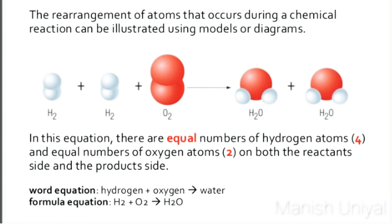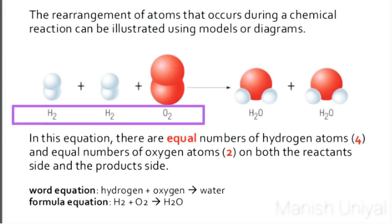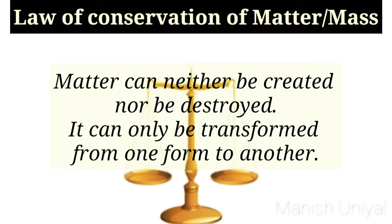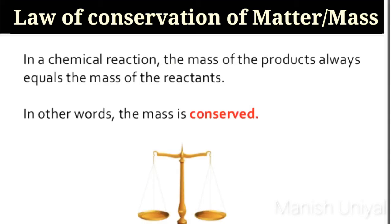In such an arrangement, the number of atoms in the reactant side will be equal to the number of atoms in the product side. Law of conservation of mass: matter can neither be created nor destroyed. It can only be transformed from one form to another. In other words, in a chemical reaction, the mass of the product always equals the mass of the reactant. It means mass is conserved.